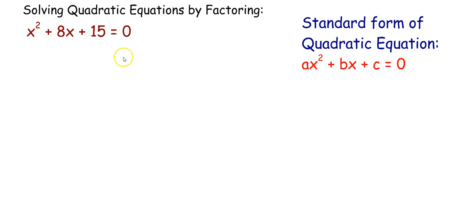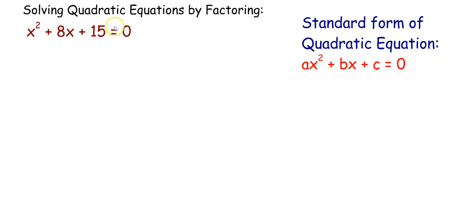In this video we are going to learn the process of solving a quadratic equation by factoring. This is a quadratic equation: x² + 8x + 15 = 0, and it is in the standard form ax² + bx + c = 0, where a = 1. In all examples today we will be looking only at quadratic equations where the leading coefficient a is equal to 1.